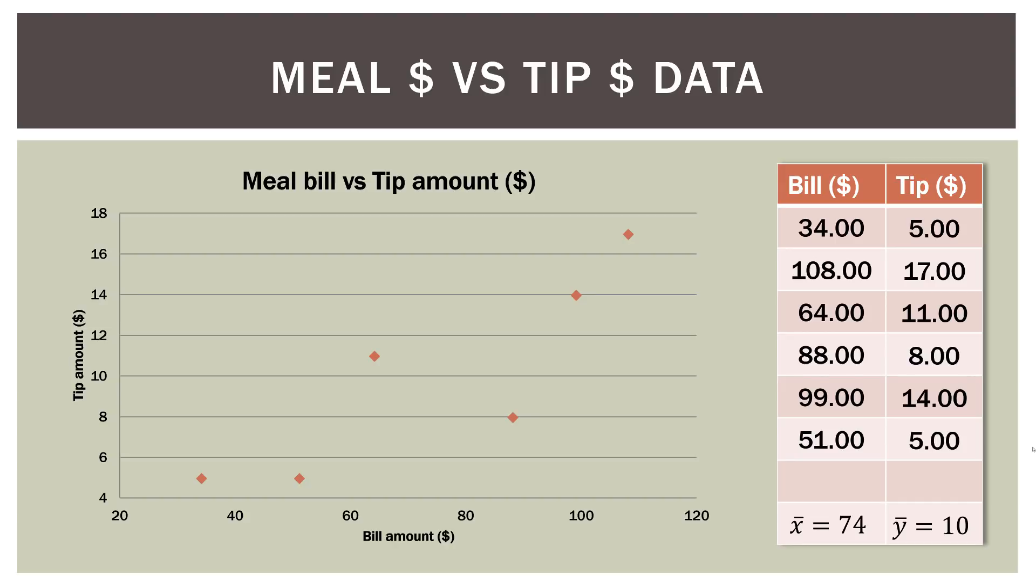And we are building a regression model based on this data. And I do want to point out the mean for each variable, because it will be important later. You can see that the mean bill amount was $74, that's x-bar, and the mean tip amount, y-bar, was $10.